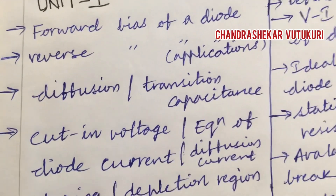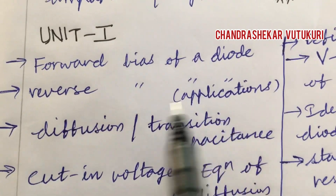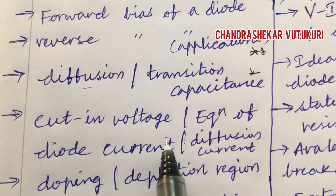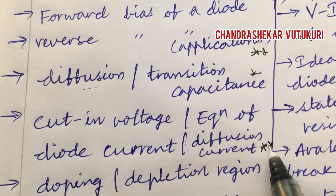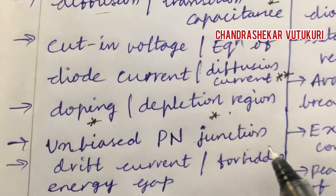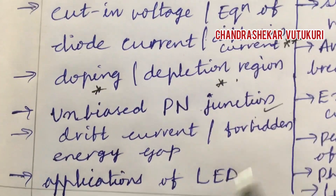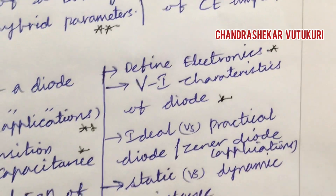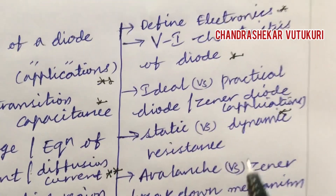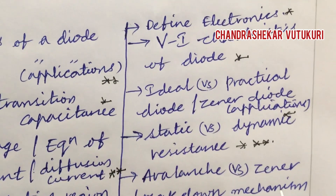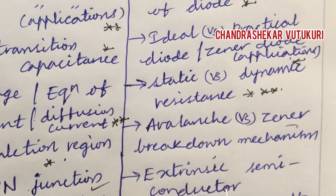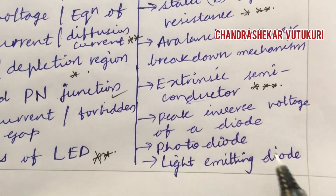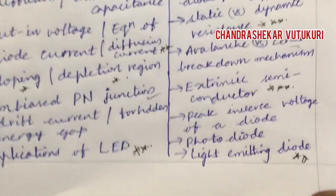Unit 1 covers: forward bias and reverse bias of a diode and their applications. Define diffusion and transition capacitance, cutting voltage, equation for diode current and diffusion current — top-most questions. Doping, depletion region, unbiased PN junction, drift current, forbidden energy gap, and applications of LEDs are also top questions. Short questions may include: define electronics, V-I characteristics of diode, ideal versus practical diode, Zener diode and applications, static versus dynamic resistance, avalanche versus Zener breakdown mechanism, intrinsic semiconductor and types, peak inverse voltage, photodiode, and light-emitting diode.